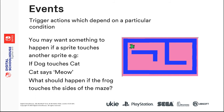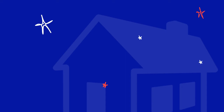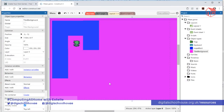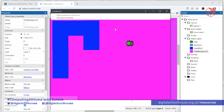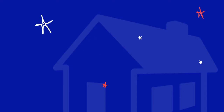We are now going to add some events. Events are trigger-actions which depend on a particular condition — for example, something happens if a sprite touches another sprite. What should happen if the frog touches the side of the maze? At the moment if you do a quick preview, the frog goes straight through the maze wall — that's definitely something that shouldn't be happening. So we need to think about what should happen: we're going to make him start back at the beginning again every time he touches the side of the maze.